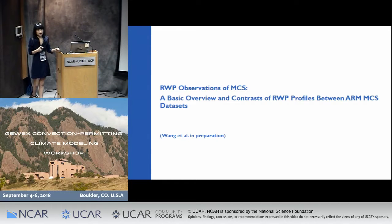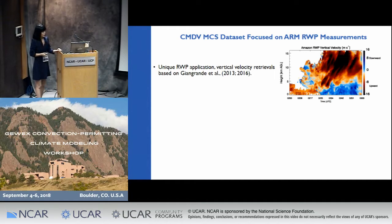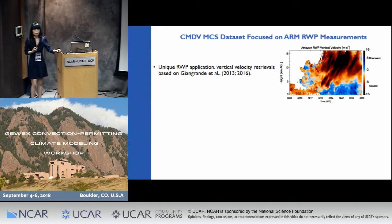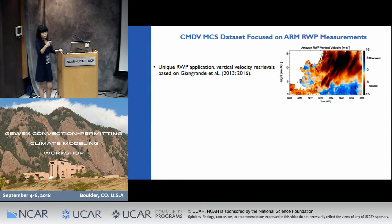I will first give you a basic overview of the observations and the contrast between different ARM datasets. What we are really focusing on is the radar wind profiler measurements. Most of you may be familiar with radar wind profilers for retrieving horizontal winds, but here ARM reconfigured this radar wind profiler to be a vertically pointing precipitation radar. On the red panel here you can see a time-height image of retrieved vertical velocity based on methods we have been publishing in the past.